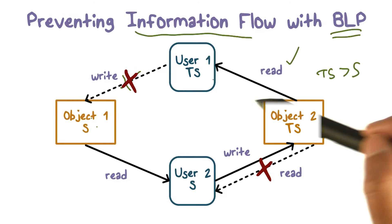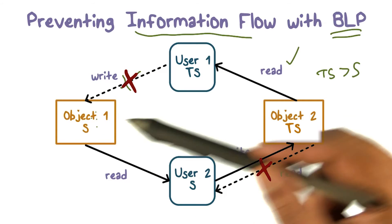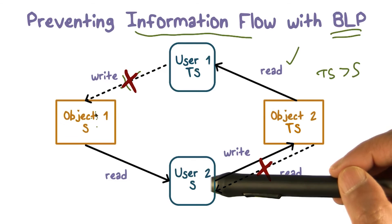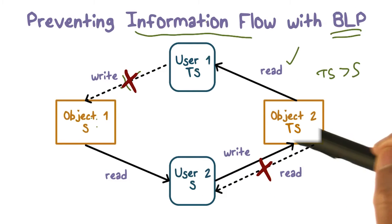So although a top secret user can take this information, read it, but they're not able to write it in an object that can be read by somebody who is not cleared to top secret. So this path doesn't allow information flow to get to a lower level.